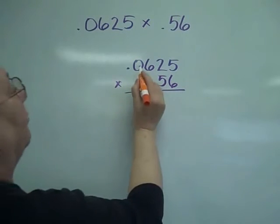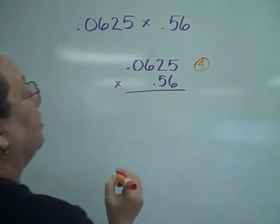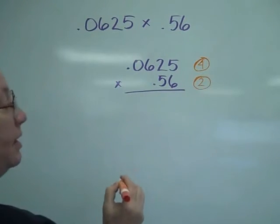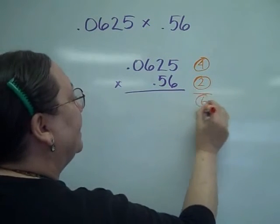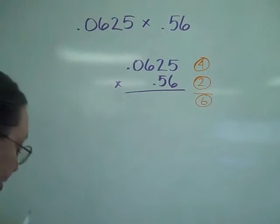Looking at my decimals, I have one, two, three, four numbers behind the decimal there. I have two numbers behind the decimal here, which will give me a total of six numbers behind the decimals in my answer.